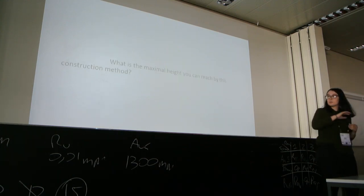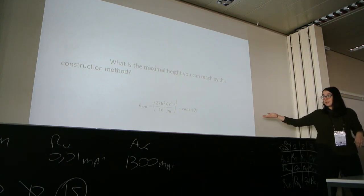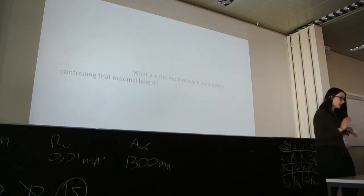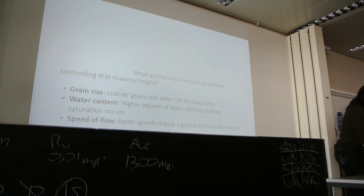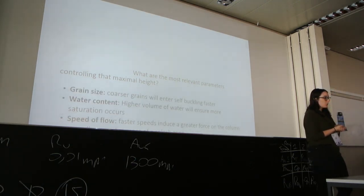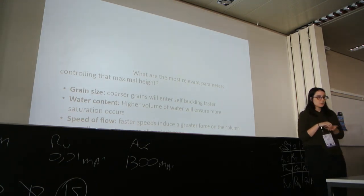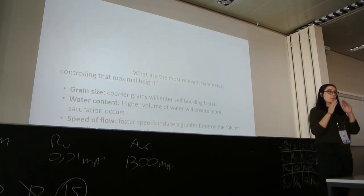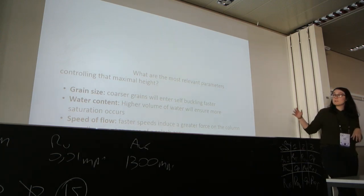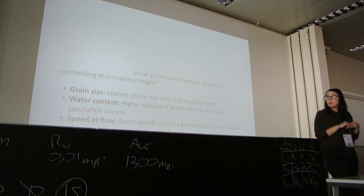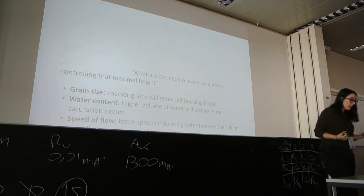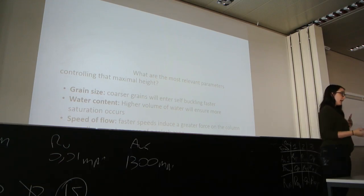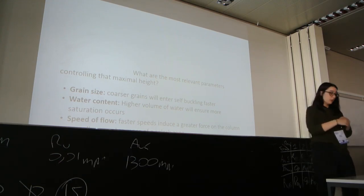To answer the first question: we can model it ideally, though there are some limitations. For the second question — what are the most relevant parameters controlling maximum height — there are essentially three. First, grain size: a coarser grain size means you enter the self-buckling phase earlier because you need a higher water concentration for the slurry stage, so you can build the tower outside of water faster. Second, water content: higher volume of water leads to more saturation. Third, the speed of the flow: a fast flow causes more sand to bounce away and creates a greater impact force. Thank you.